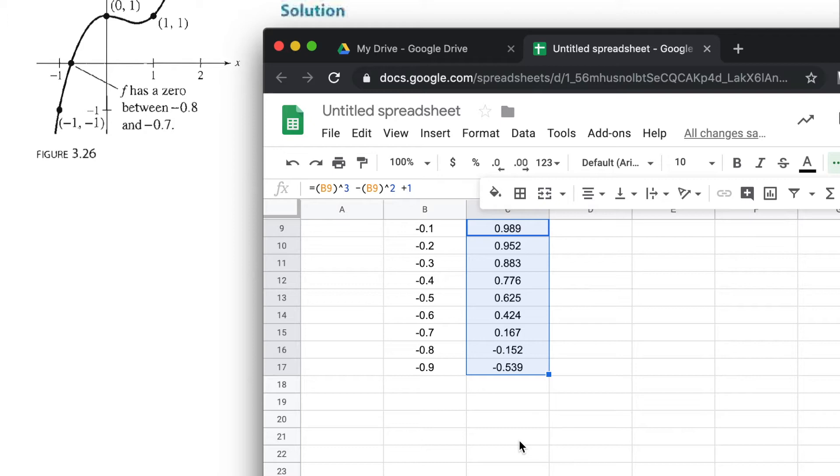If you want, we can get some more accuracy and drill down into there. Let's go one-hundredths between -0.7 and -0.8. We're going to start with -0.71 and go to...